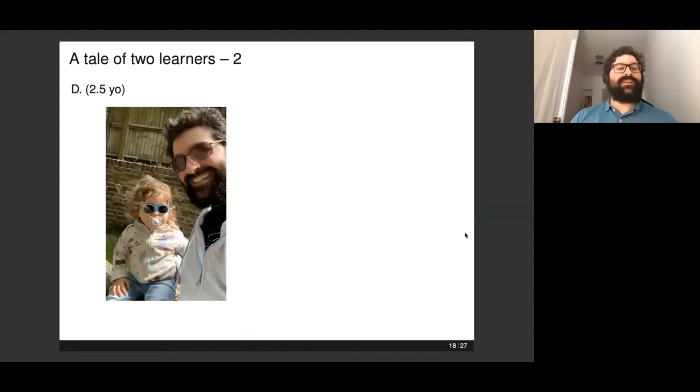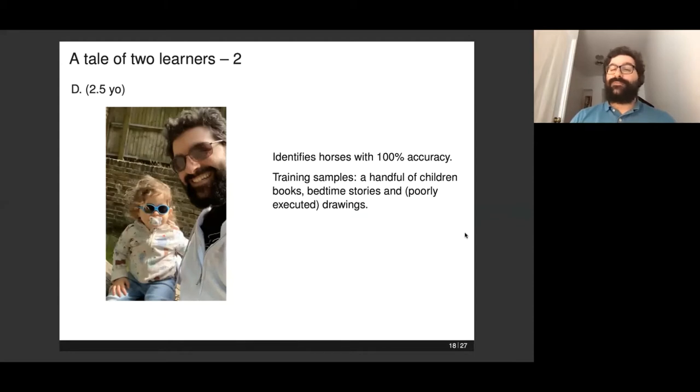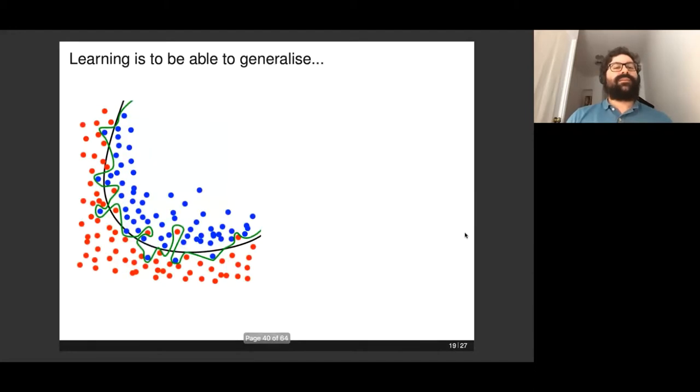Here's learner number two, my own daughter, who's also very interested in identifying horses in images and books. Surprisingly, the accuracy is not much different between machine and human. She would still identify horses with almost 100% accuracy. But the training samples are very different. It's just a handful of children's books, a few bedtime stories, some drawings, sometimes poorly executed by me, I'm afraid. But the point is, you still need an amount of data which is not even comparable to the deluge of data you need to train a similar neural network on the same task. Obviously, this is still an expensive training, but for different reasons.